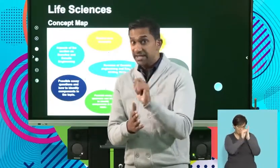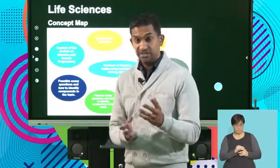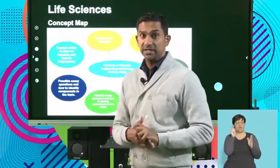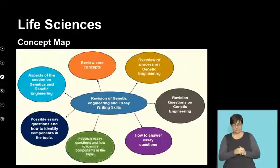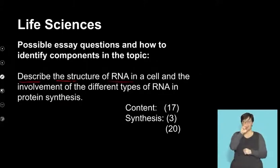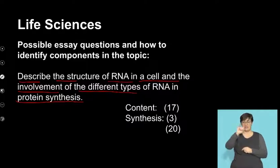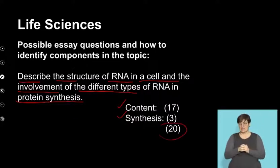I trust that you will take down these topics and try to attempt writing these essays once you've revised the section. So let's look at our first topic and try to unpack exactly how to look at writing this essay. The first question: describe the structure of RNA in a cell and the involvement of different types of RNA in protein synthesis. The content is 17 marks, the synthesis is 3 marks, and that's 20 marks.